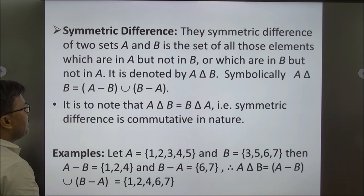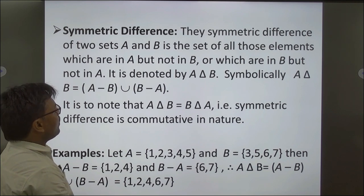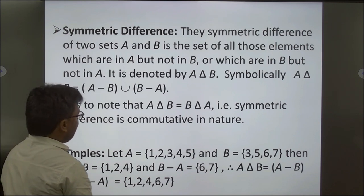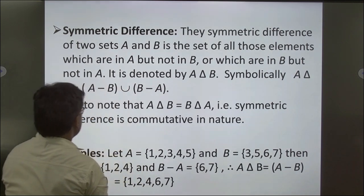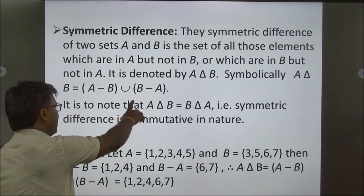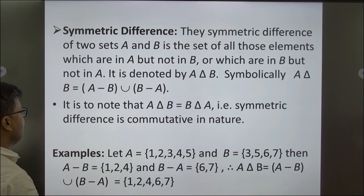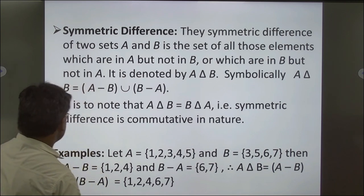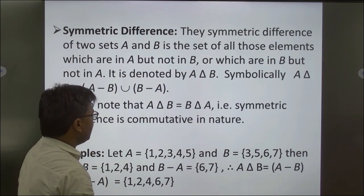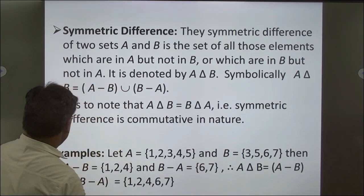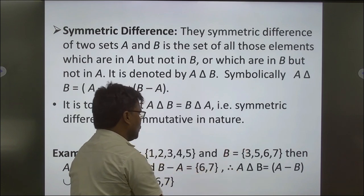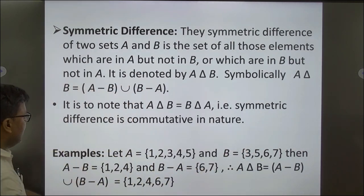Symmetrical Difference: The symmetrical difference of two sets A and B is the set of all elements which are in A but not in B, or in B but not in A. It is denoted A △ B = (A − B) ∪ (B − A). Note that A △ B = B △ A — symmetrical difference is commutative. Example: A = {1,2,3,4,5} and B = {3,5,6,7}. Then A − B = {1,2,4}, B − A = {6,7}, so A △ B = {1,2,4,6,7}.